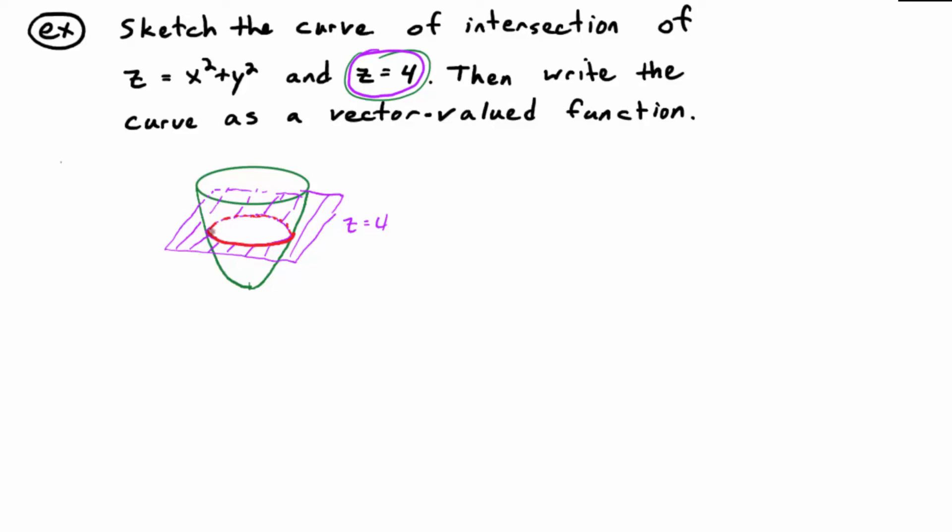It is a curve. So, that's the curve of intersection. And if you think about it, when does that curve occur? It occurs when the z value is four. So, four equals x squared plus y squared.